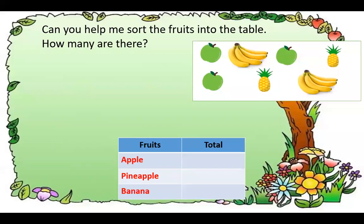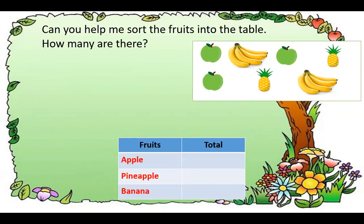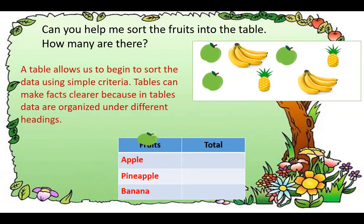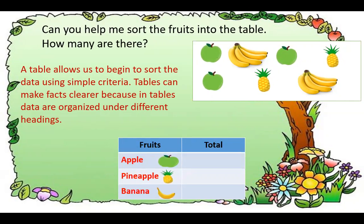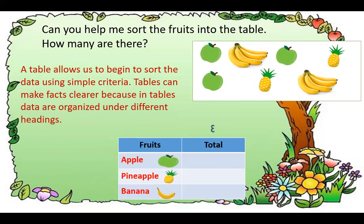Very good. Now, can you help me sort the fruits into the table? How many are there — the fruits and the total? A table allows us to sort data using simple criteria. Tables can make facts clearer because data are organized using different headings. The first is apples: 3. Pineapples: 2. And bananas: 8.